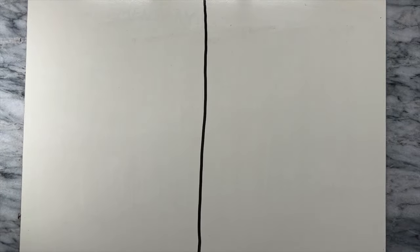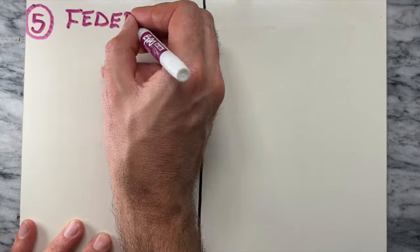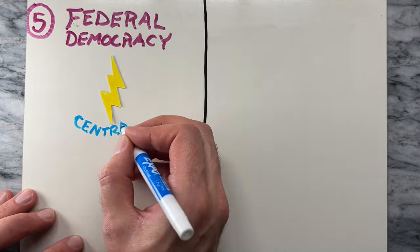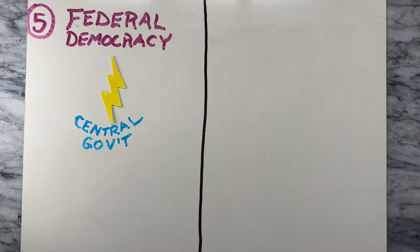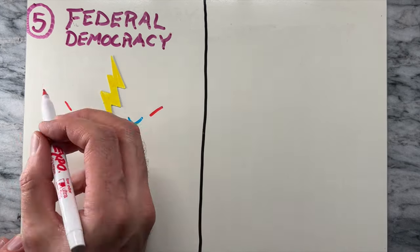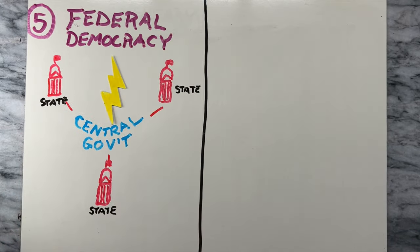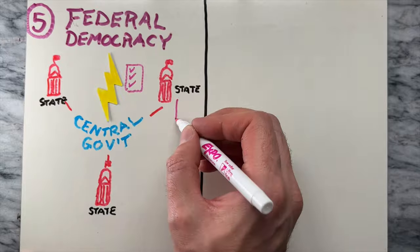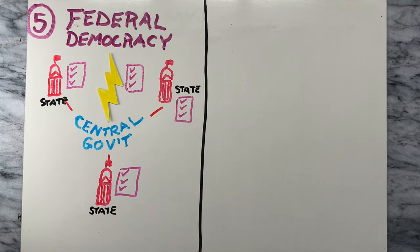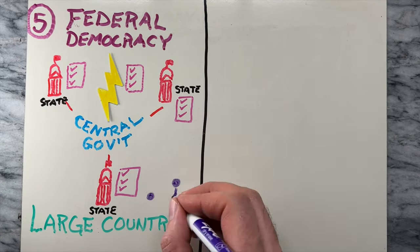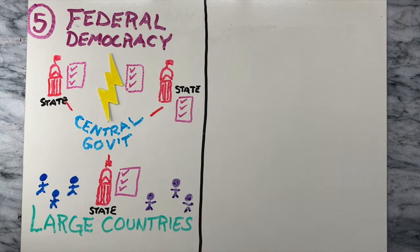Then there's federal democracy. In a federal democracy, power is divided between a central government and regional or state governments. Both levels of government have their own set of powers and responsibilities. Federal democracies are often used in large countries to accommodate regional diversity.